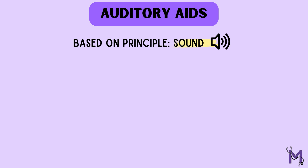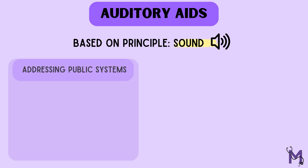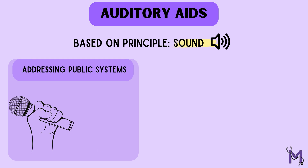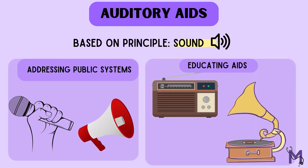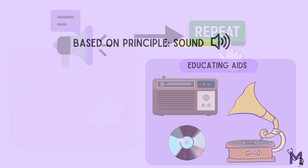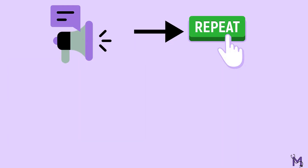Some of the commonly used auditory aids in health education are public addressing systems like microphones and megaphones. Radio and gramophone records and discs can also be used for educating people.